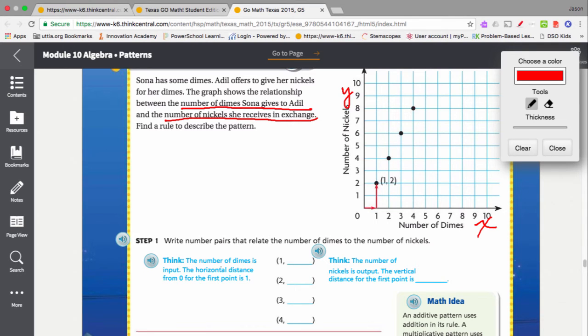Well, let's look at the ordered pairs. When x is 1, y is 2. When x is 2, y is 4. When x is 3, y is 6. And when x is 4, y is 8. So the question is, what is the relationship between x and y?